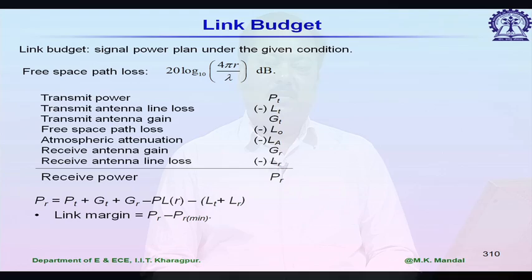We are discussing link budget and link margin, and we concluded that at least a value of 3 dB to 10 dB link margin should be maintained for any given receiver system. We will take one numerical example of how to calculate a link budget and link margin.